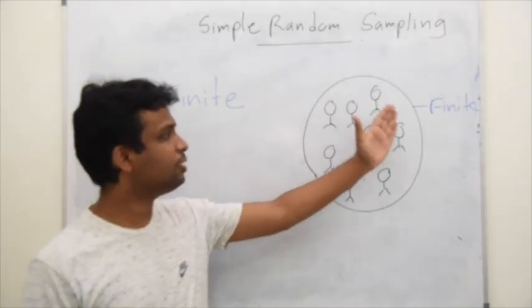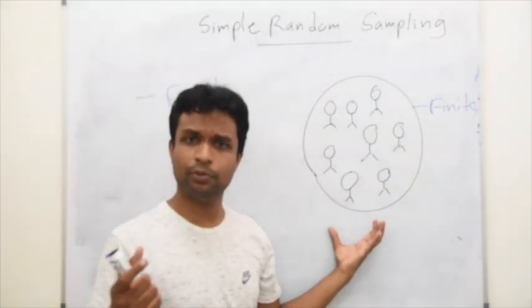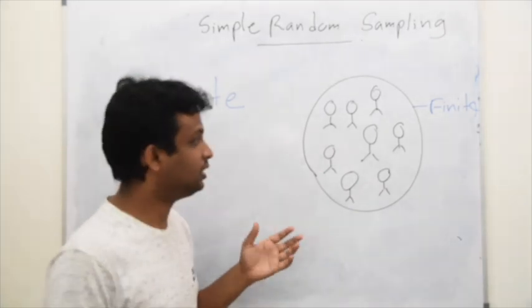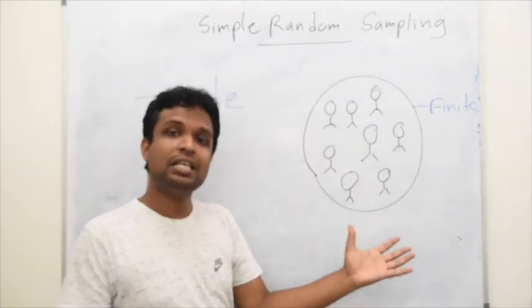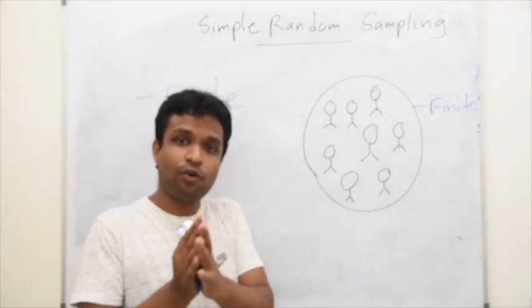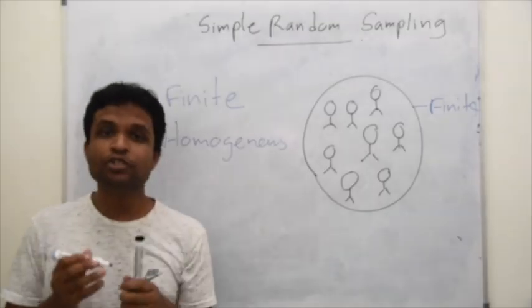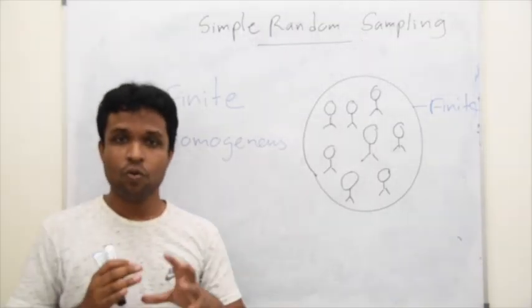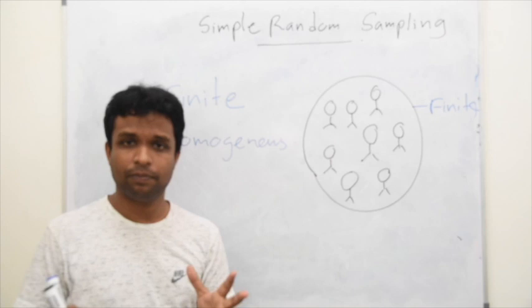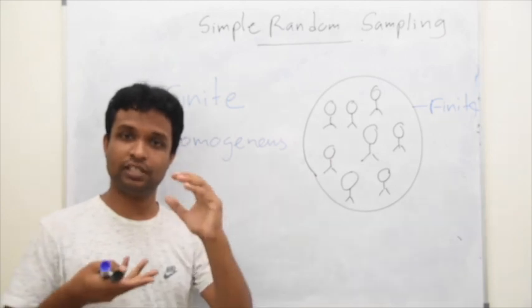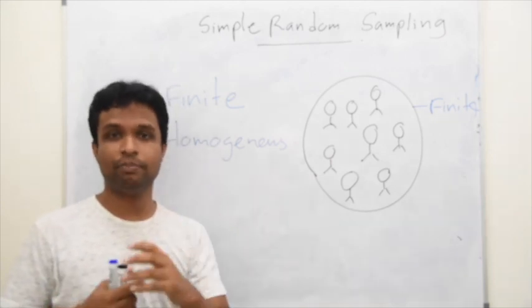In a finite population, if the population is very small, we can assume that all the individuals are same. We call that property homogeneous population. That means all are almost same. As the total population is small, we can use simple random sampling.